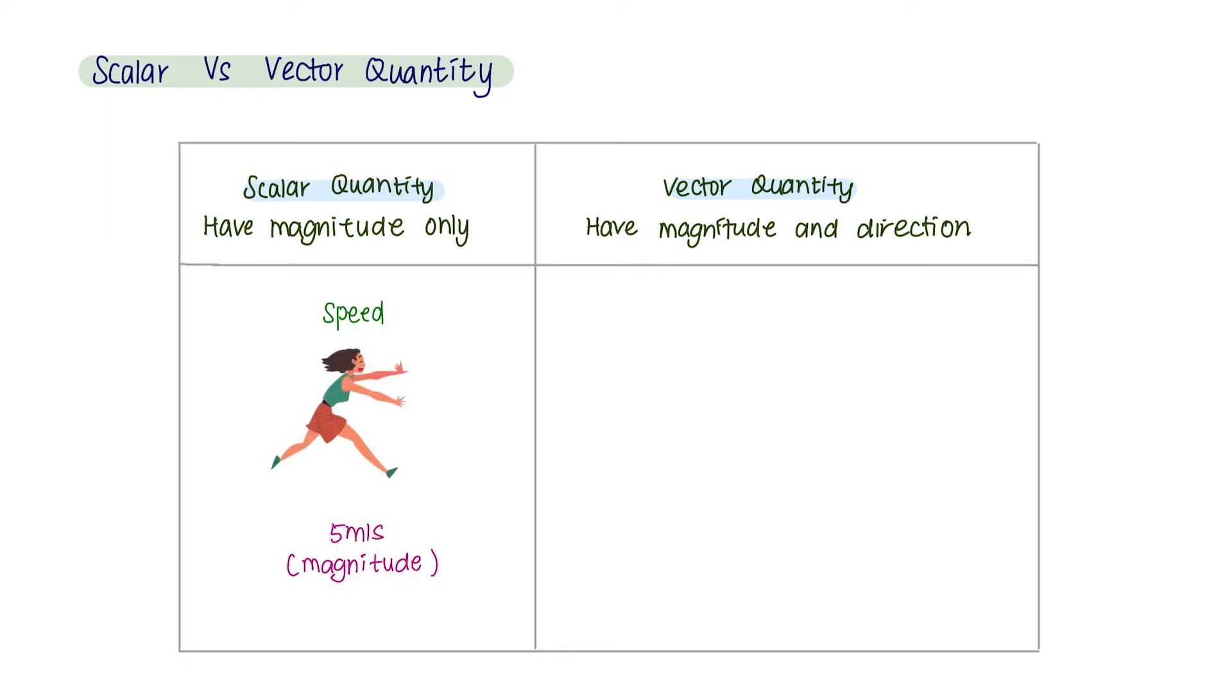A woman is running at a speed of 5 meters per second. 5 meters per second here is your magnitude. And velocity is a vector since it is a quantity that has both magnitude and direction. A woman is running at a speed of 5 meters per second to the right. 5 meters per second is your magnitude and to the right is the direction.